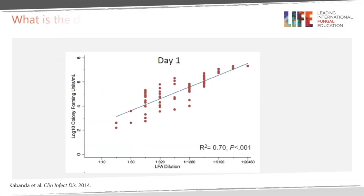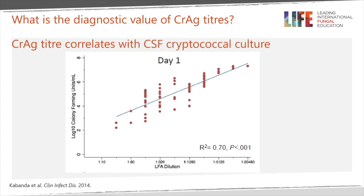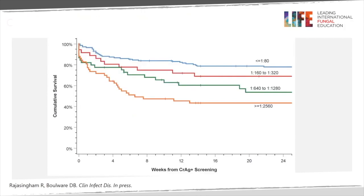The graph on this slide depicts the correlation between CSF cryptococcal culture on the y-axis and CrAg lateral flow assay titers on the x-axis in HIV-infected persons in Uganda with cryptococcal meningitis. The culture and CrAg titer results correlate strongly on day one of enrollment. This value of titer to predict quantitative culture decreased over time and was no longer seen seven or 14 days later.